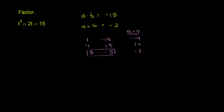So what we want to do here is break this middle term up. We know that 3 plus negative 5 is equal to negative 2, so we can break up this middle term as a sum. We can rewrite this expression as t squared — putting the minus 15 out here — and the negative 2t we can rewrite as plus 3t minus 5t. Positive 3 times negative 5 is equal to negative 15. That's where it came from.